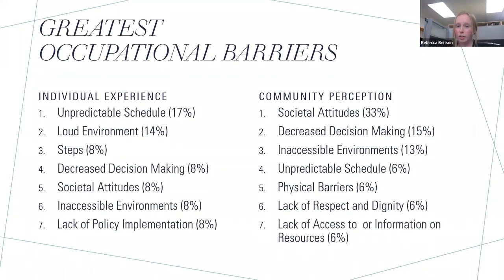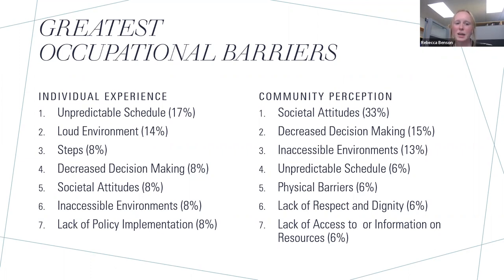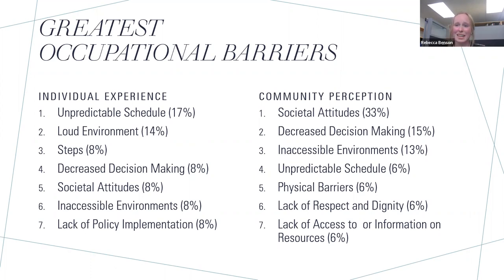Looking at the greatest single occupational barrier — where you could only pick one — the percentages show the difference between community perception and individual experience. The community sees societal attitudes as the biggest issue. But individuals with disabilities say we need to fix basic things: having a predictable schedule, altering the environment so it's not so overwhelming, and being able to get around places — whether it's steps or other inaccessible elements. An inaccessible environment can really be anything.